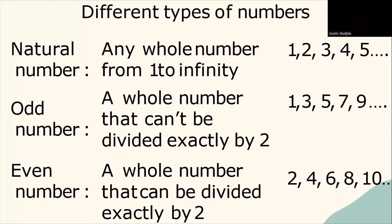Secondly, we have odd numbers. What is an odd number? Odd number is a whole number that can't be divided exactly by 2. Example: 1, 3, 5, 7, 9, 11 and so on.